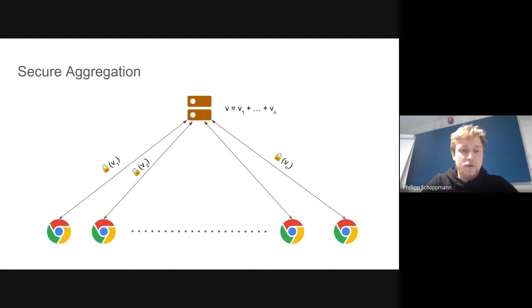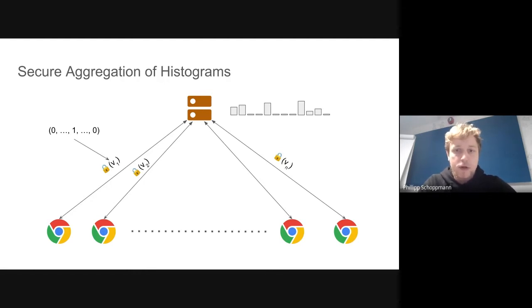A special case of the secure aggregation setting is when we have one-hot vectors from the clients. That means each of the client's vectors only contains a single non-zero value and everything else is zero. In that case, the output can be seen as a histogram. Depending on the size of the domain of these vectors, it will be sparse or dense. In particular, if the number of clients is much less than the domain size, then this histogram will be sparse.